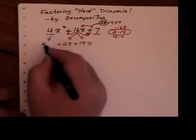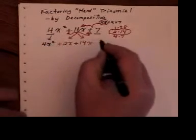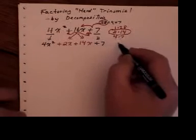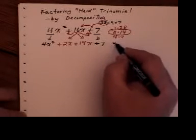Now, the 4x squared, you write here, and the plus 7, you write there. So, the first step is to increase your problem from 3 terms to 4 terms.